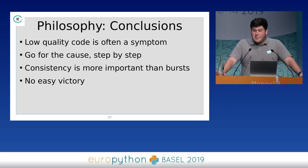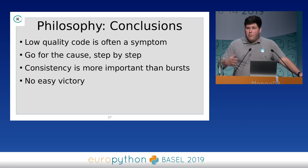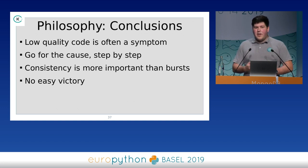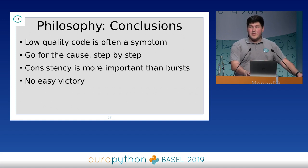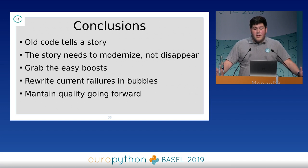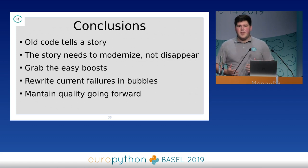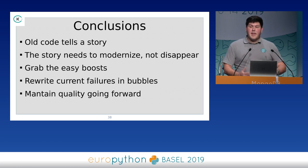Basically, low-quality code is a symptom. It's a thing that happened because of bad decisions, but you cannot fix it overnight. Go step by step and try to keep it consistent — try to keep it a philosophy of the company and not just your own one-day inspiration. There's no winning this overnight; it takes a lot of policy changes, reviews, and introspection. When you have old code, it tells a story. There's a reason why most of those decisions were made. That story needs to become better — it needs to modernize, it doesn't need to be rewritten. First, grab the easy boosts — add some tooling, make it obvious that people want to make improvements. Try to rewrite the failures you have in bubbles one by one, isolating them using any type of abstraction — some facades. Then maintain quality going forward: teach your people how it works and why.